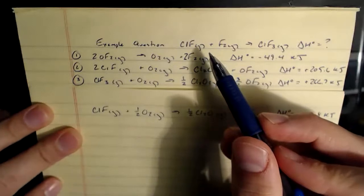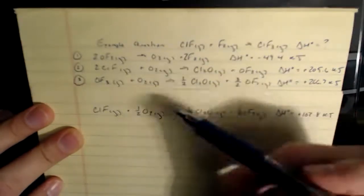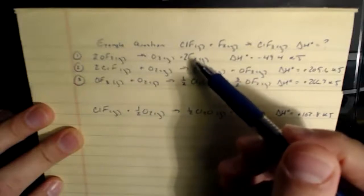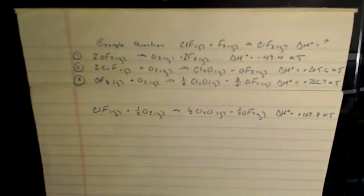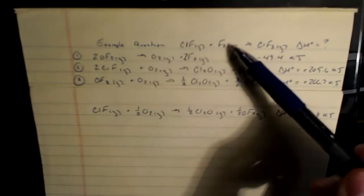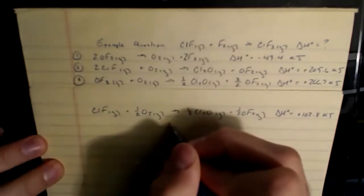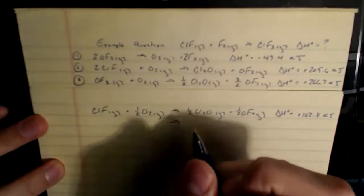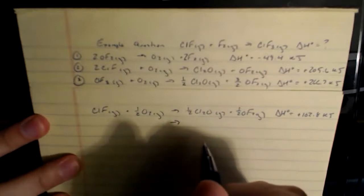Next thing that I'll target is my F2. F2 only appears in equation 1, but not only is it doubled, it also only appears as a product. Notice here, it's a product I needed as a reactant. So when I rewrite equation 1 here, I have to do two things. I have to flip the equation around and make the reactants products, products reactants. And I have to half everything.